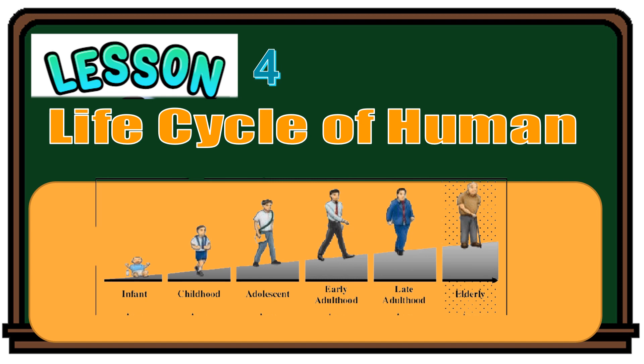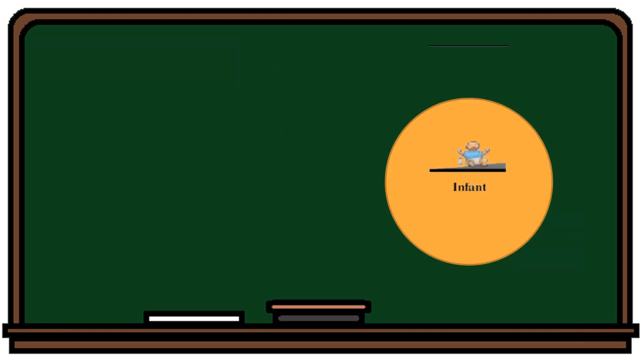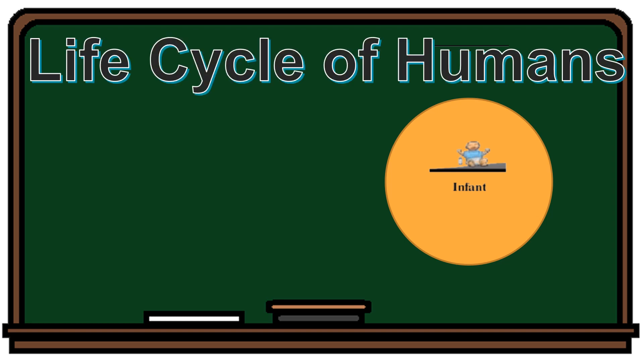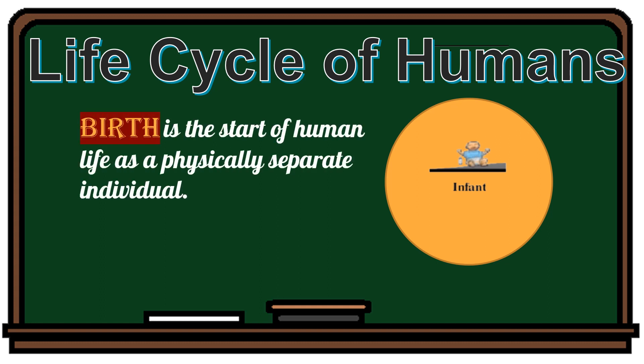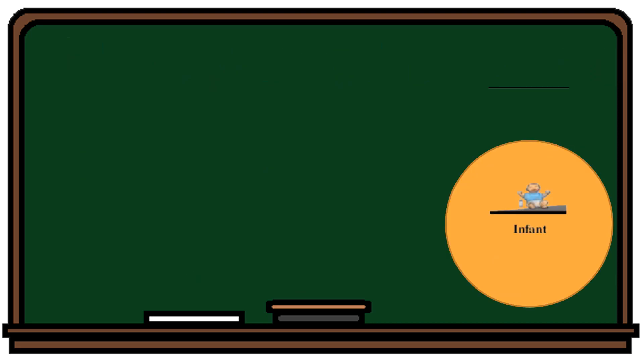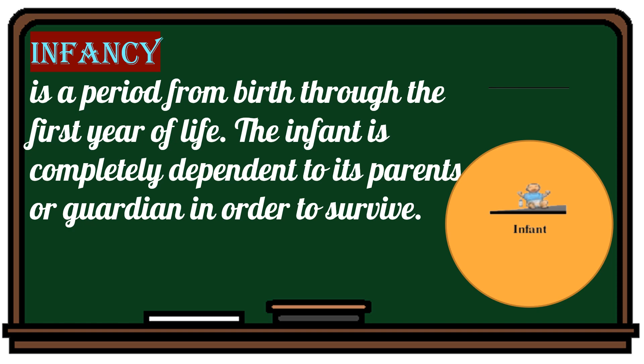You started out as a tiny egg inside your mother's womb. Here are the stages in the life cycle of humans. Birth is the start of human life as a physically separate individual — a period when a baby is born. Infancy is a period from birth through the first year of life. The infant is completely dependent on its parents or guardian in order to survive.